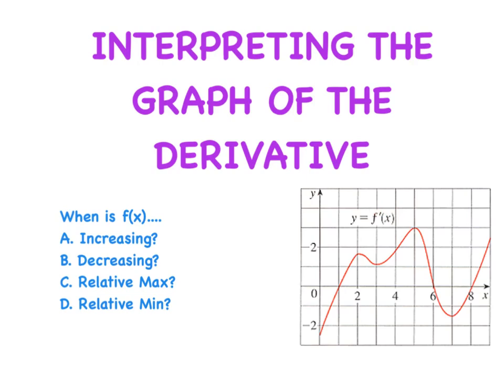This is by far and away one of the AP exam's favorite questions, and we're going to see this multiple times. Our goal today is to take this picture and use it to answer these questions: when is f increasing, when is f decreasing, when is there a relative max, and when is there a relative min? We've done this algebraically where they've given us an equation for f, we would derive it, find all of f's critical points, and construct a sign chart. But tonight, instead of doing it algebraically, we're going to figure out how to do it graphically.